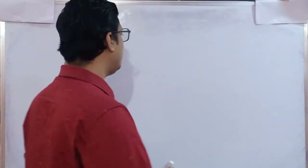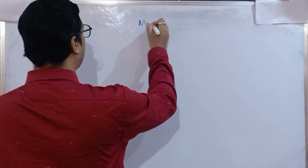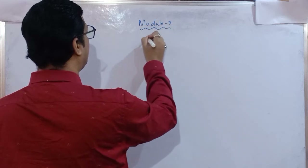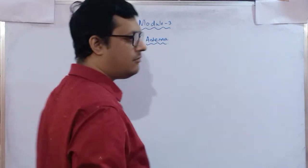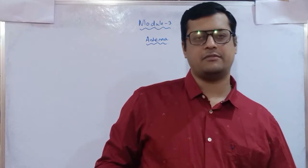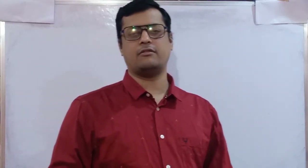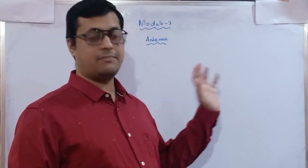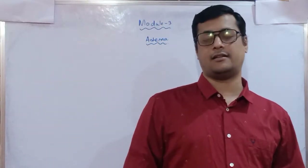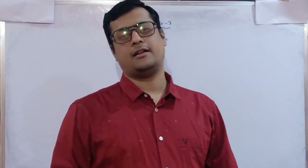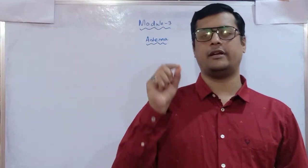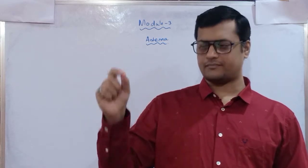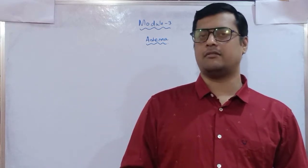Good morning all. Today we are going to discuss the second part of Module 3, which is based upon antenna. This antenna module covers the basic parameters we are going to discuss with respect to the antenna — what are the basic parameters available, what characteristics are there, how many features are there, and what components we are going to identify. We will go through everything in a brief manner with respect to the characteristics of a particular radiating element.